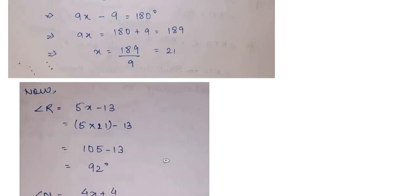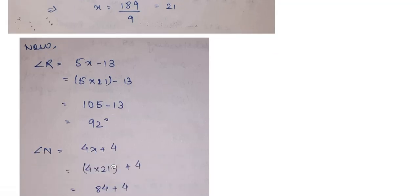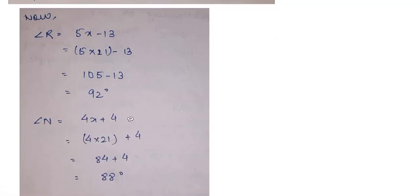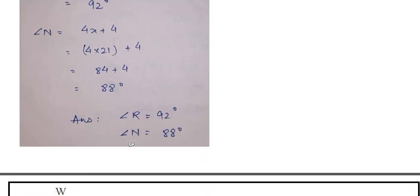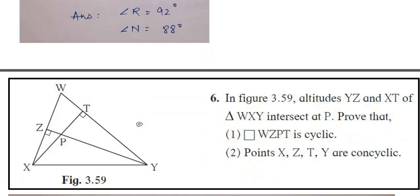But you have to find R and N. R is 5X minus 13. Put 21 in place of X. Solve it, you get 92. N is 4X plus 4. Put 21 in place of X. Solve it. Do the multiplication first. Then do the addition. That gives you 88 as the answer. So the value of R and N has been found out to be 92 and 88.